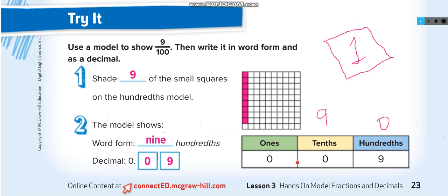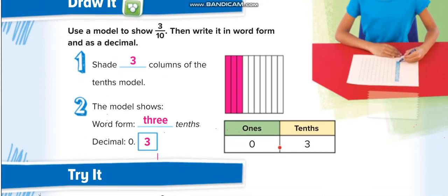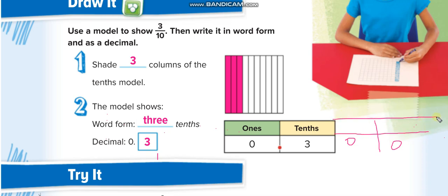Another thing: for the first example, 0.3 can also be written as 0.30 or 0.300 — they are all the same thing. We have three in the tenths place, zero in the hundredths place, and zero in the thousandths place. So 0.3, 0.30, and 0.300 are all equivalent. I hope you understand this.